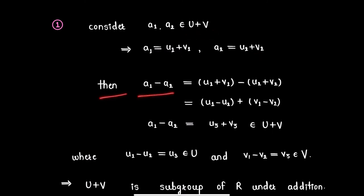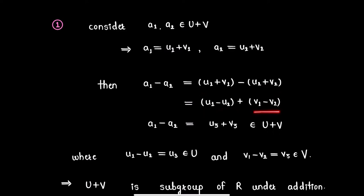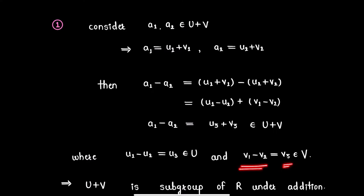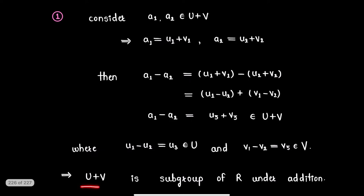Then we have a₁ minus a₂ equals (u₁ plus v₁) minus (u₂ plus v₂), which can be written as (u₁ minus u₂) plus (v₁ minus v₂). Therefore a₁ minus a₂ equals u₃ plus v₃, where u₃ = u₁ minus u₂ is an element from ideal U, and v₃ = v₁ minus v₂ is an element from ideal V. Therefore a₁ minus a₂ is an element of U plus V, which implies U plus V is a subgroup of R under addition.